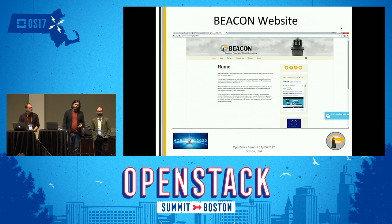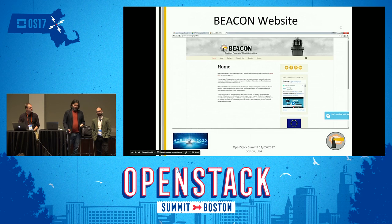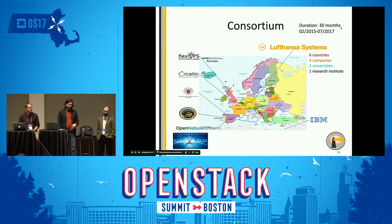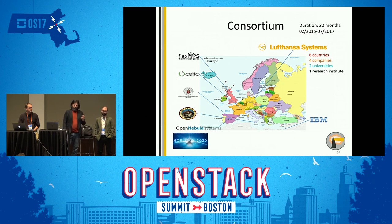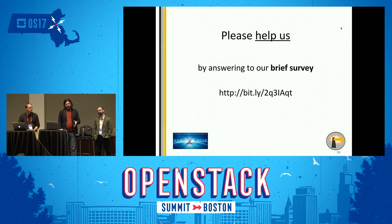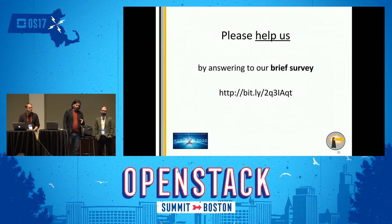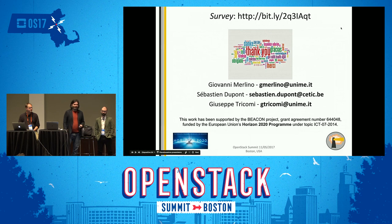The BEACON website is www.beacon-project.eu, where you can find all information including publicly available deliverables. The consortium includes the University of Messina, CETIC, IBM, OpenNebula Systems, Universidad Complutense de Madrid, FlexiOps, and Lufthansa. This is a Horizon 2020-funded project by the European Commission. Please help us by answering our brief survey. We are open for questions.